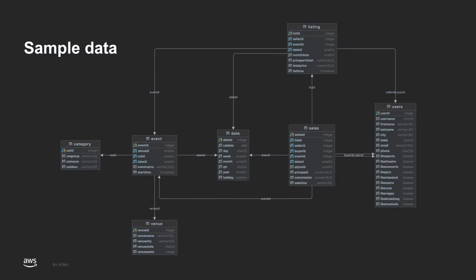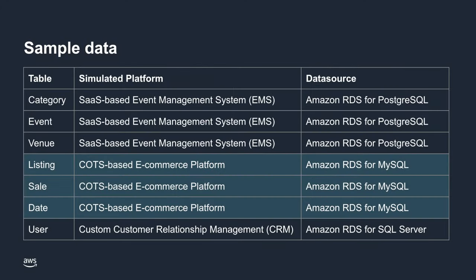Here is a schema diagram showing the relationship between the seven Ticket Database tables. A data lake most often contains data from multiple data sources, each with its own storage format, protocol, and connection method. To simulate this, I've split up the Ticket Database tables to represent three different enterprise systems, each using a different database engine on Amazon RDS. The category, event, and venue tables are in an Amazon RDS for PostgreSQL database representing a SaaS-based event management system. The listing, sales, and date tables are in an Amazon RDS for MySQL database representing a commercial e-commerce platform. The users table is in an Amazon RDS for SQL Server database, representing a custom CRM system.